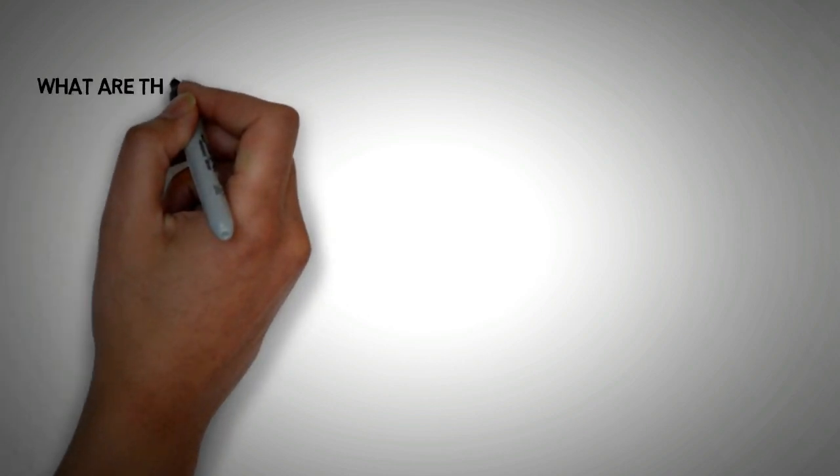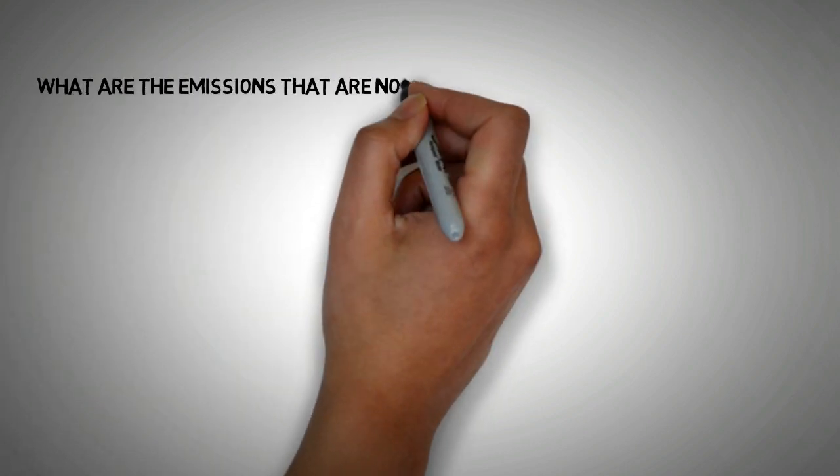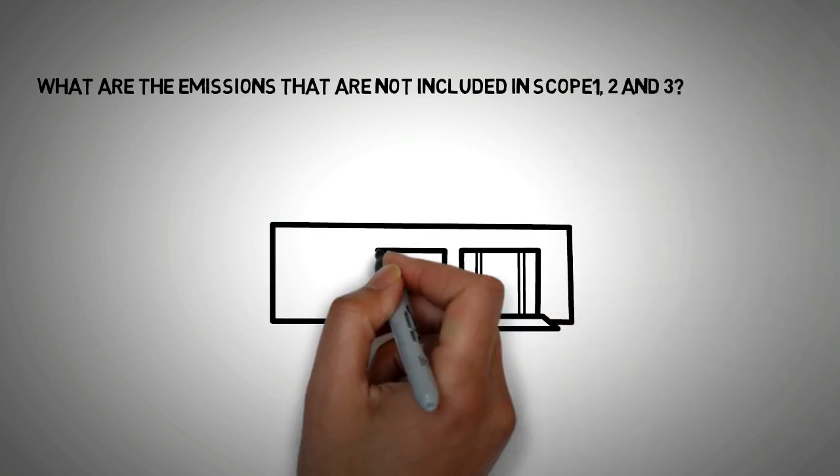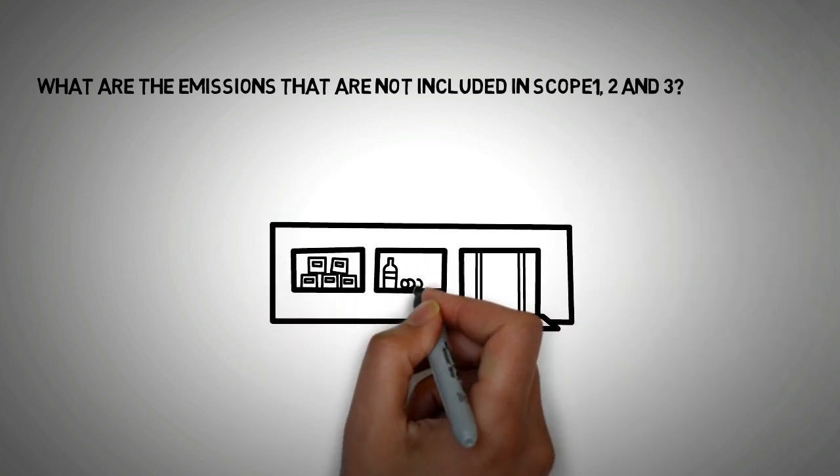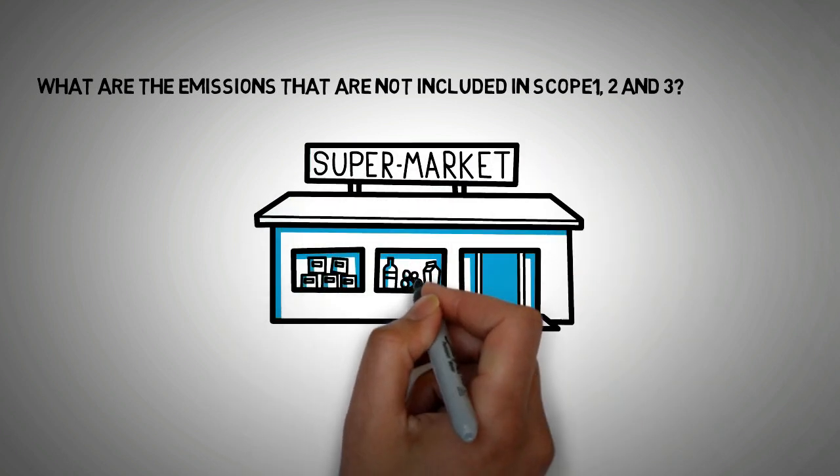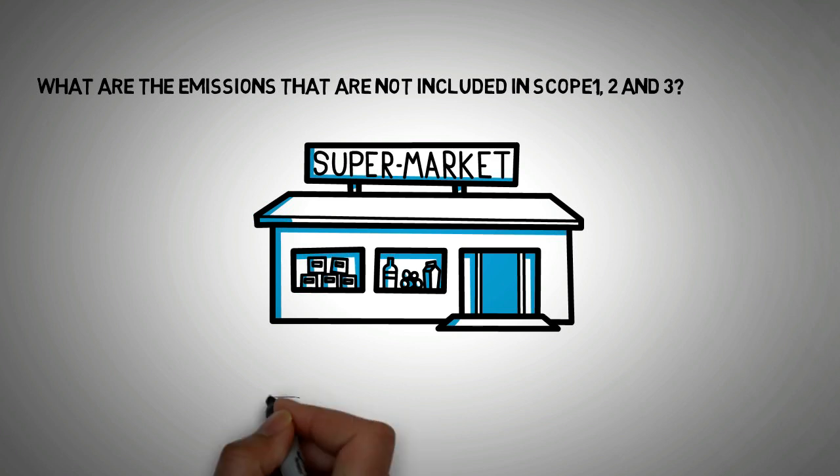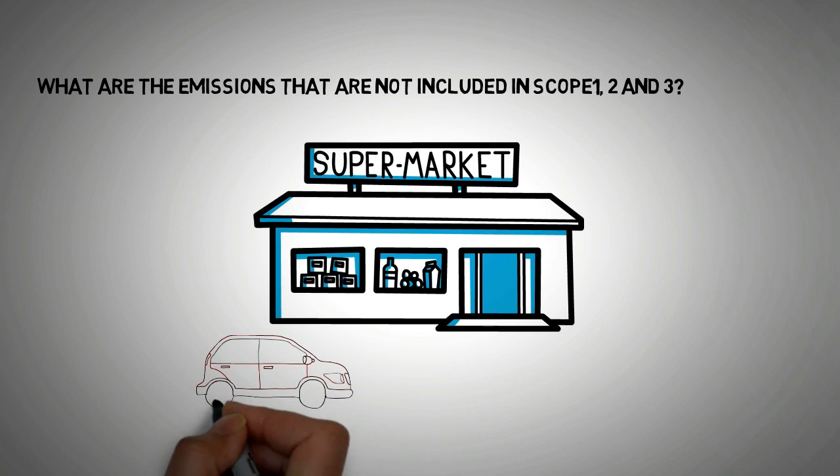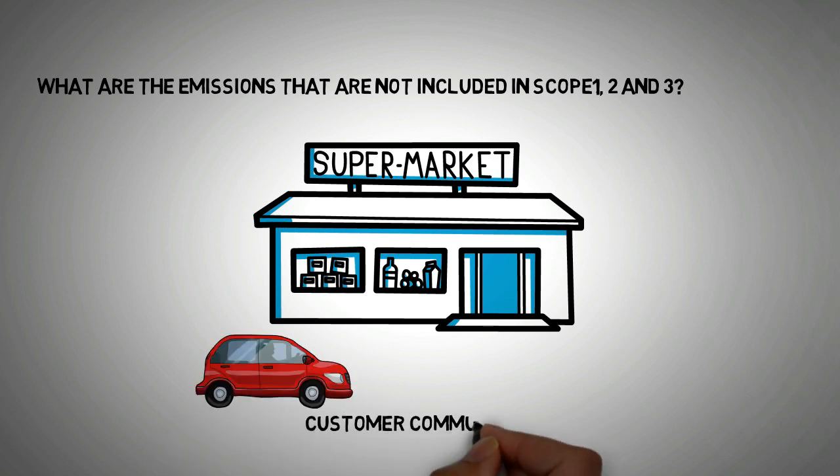So, a big question at this point would be, what are the emissions that are not included in Scope 1, 2 and 3? Well, suppose you run a supermarket. The customers that come to your supermarket use cars and purchase items. The customer's CO2 emissions, because of their traveling, are not included in any scope. It is something that is beyond the control of the organization.